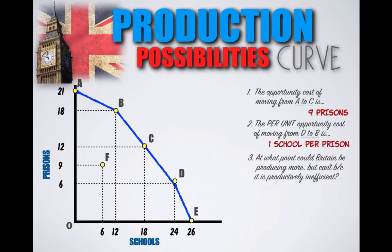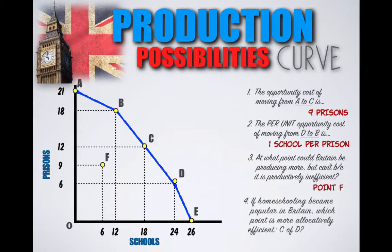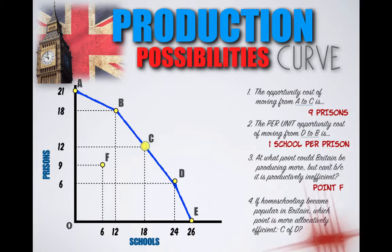At what point could Britain be producing more, but can't because it is being productively inefficient? Productive inefficiency in Great Britain is represented by a point inside the curve, Point F. If homeschooling became popular in Britain, which point is more allocatively efficient, C or D? Remember that allocative efficiency refers to producing what society needs and wants the most. In this case, social values in Britain have shifted away from public schooling and towards homeschooling, meaning public schools are not as needed as they used to be. We're looking for the combination that has fewer schools being built, meaning the more allocatively efficient point in this scenario would be Point C.